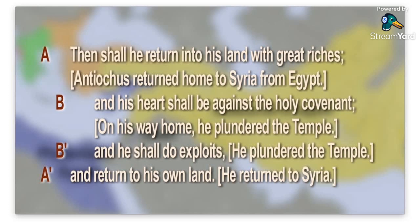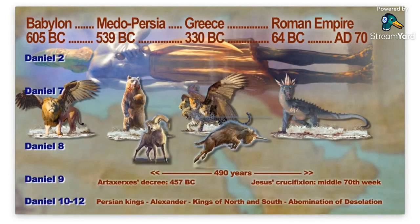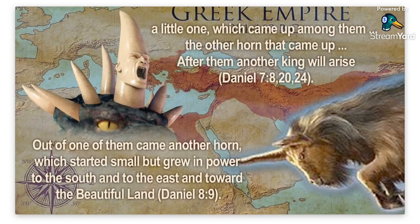The second thing I want to address is Daniel 2:44: 'The God of heaven shall set up a kingdom which will never be destroyed.' People assume that's the second coming of Christ, but from the chiastic structure of Daniel we know it's at Christ's first coming. The Old Testament prophets didn't really write about the second coming of Jesus because Jesus hadn't come yet — that hadn't been revealed until the New Testament. Daniel 2 deals with history from Babylon to the Roman Empire, so you have to go by context.